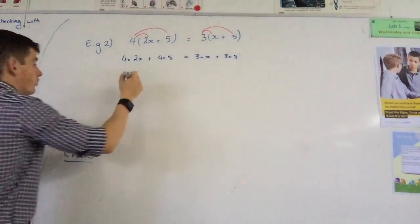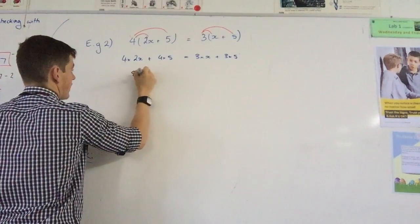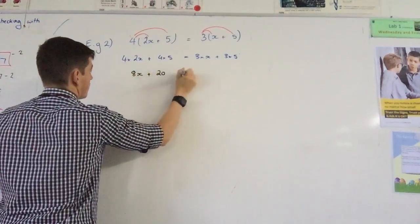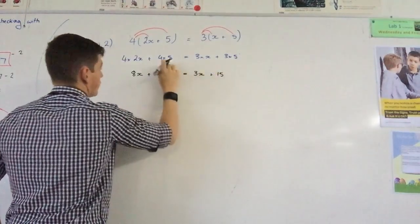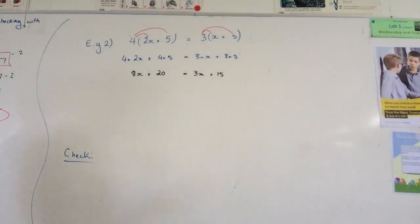Now that looks pretty gross still, so I'm going to make this a little bit simpler. So 4, 8x plus 20 equals 3x plus 15. I've just solved each one of those, so now it looks a lot nicer.